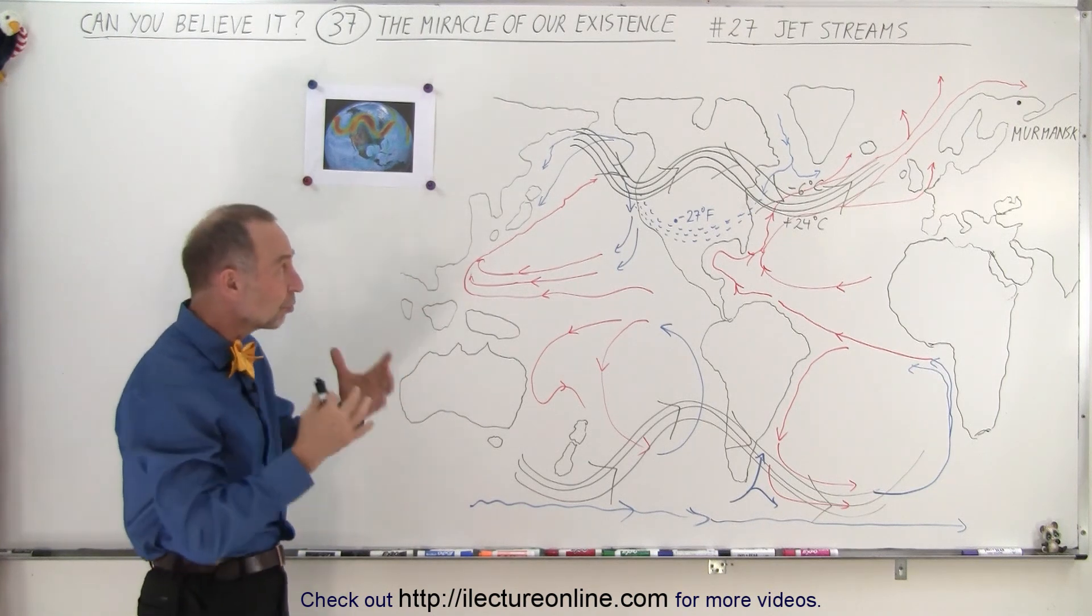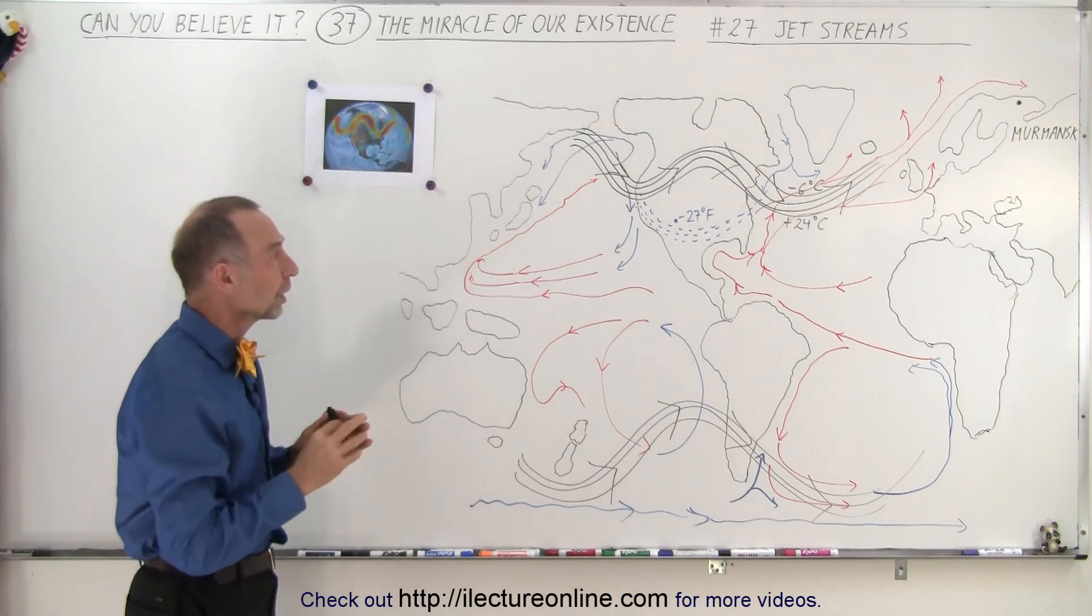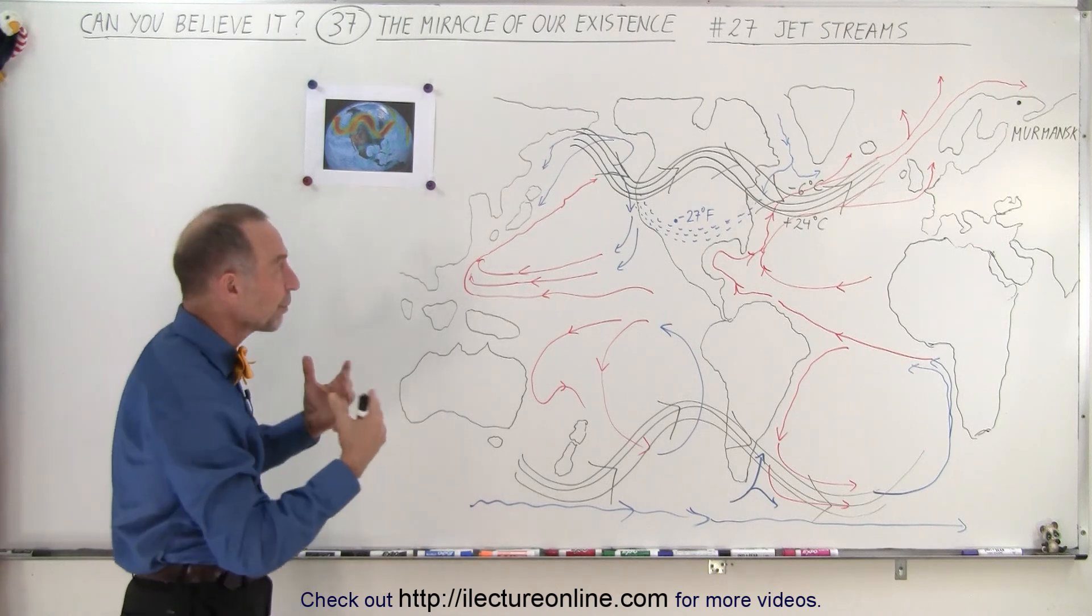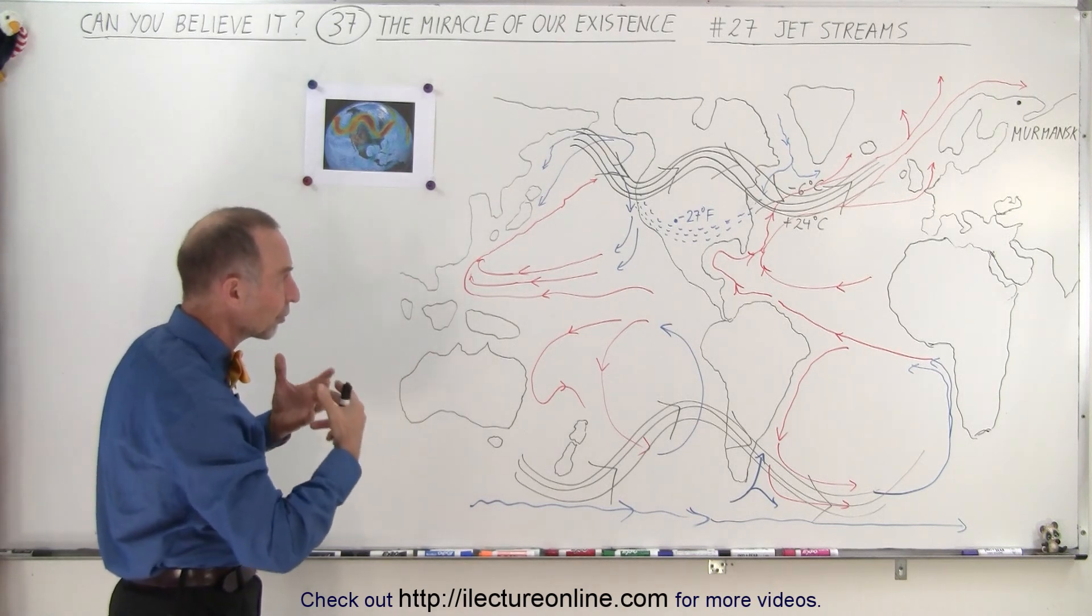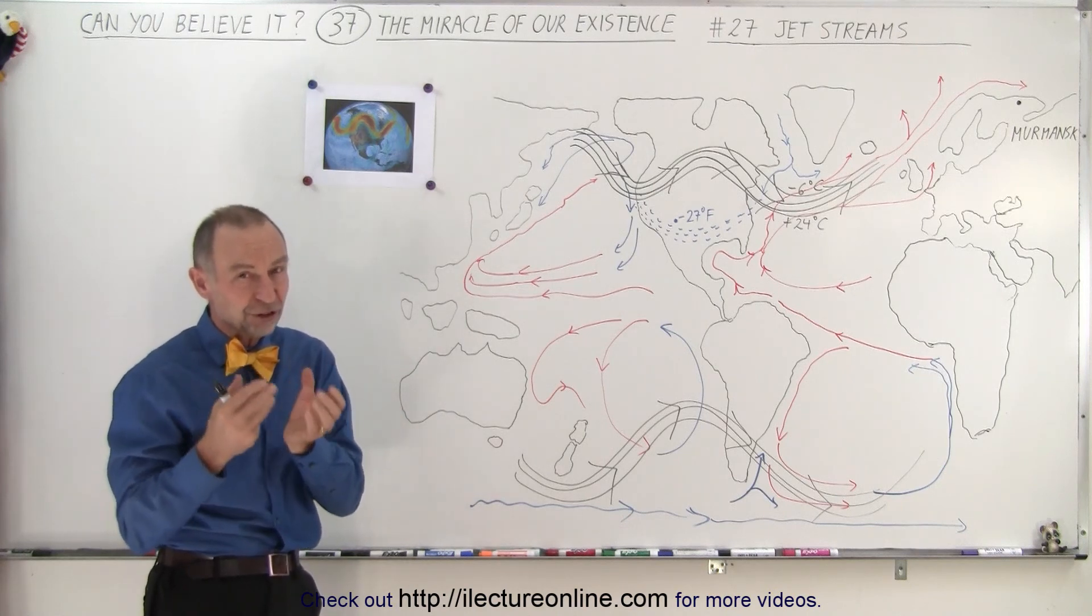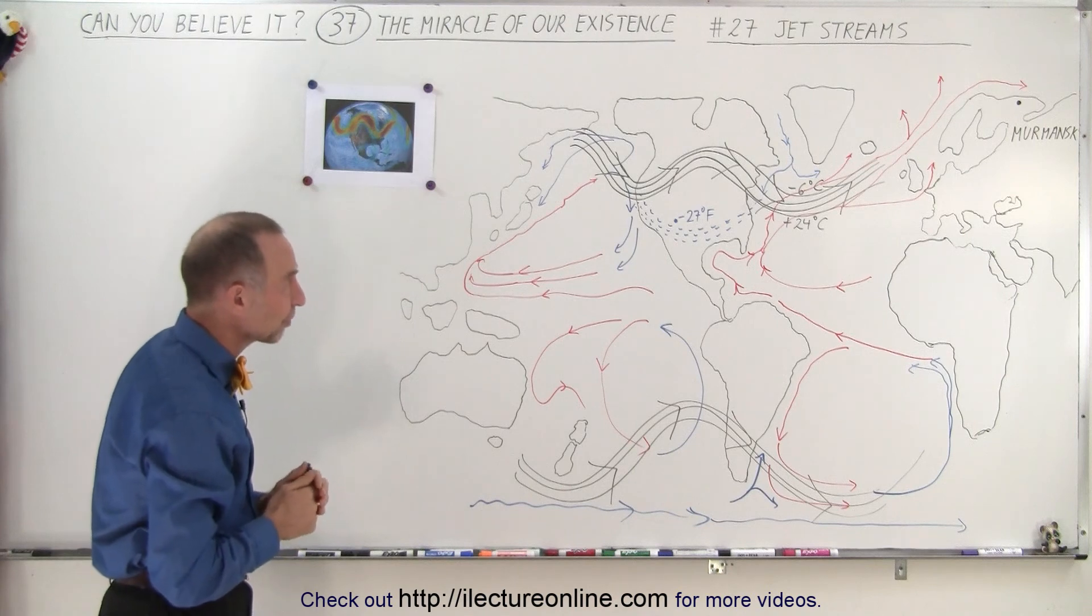Now it does move huge amounts of energy from one location to another. The jet streams and the prevailing jet streams provide certain places around the world where the temperature is relatively mild, and sometimes the temperature can be frigidly cold depending upon the direction and the position of those jet streams.